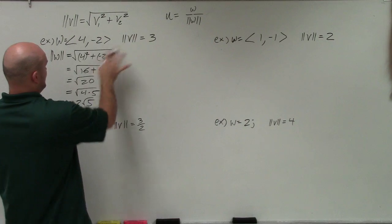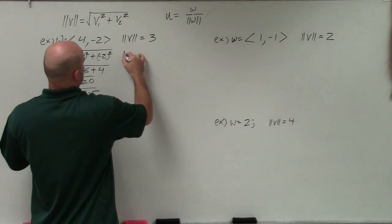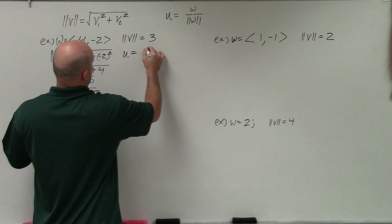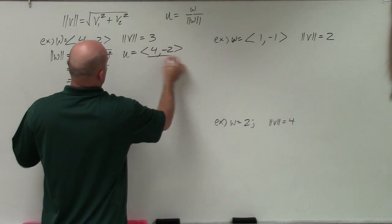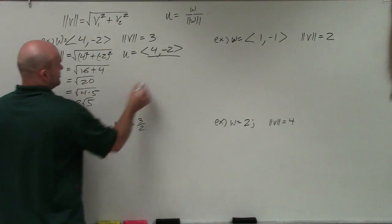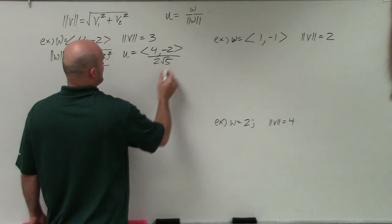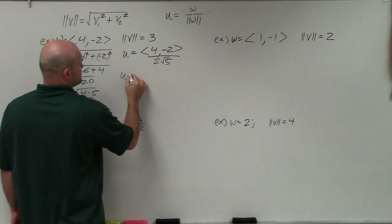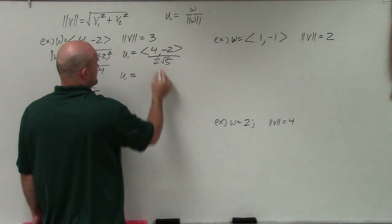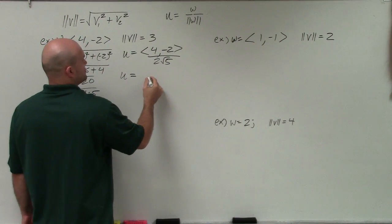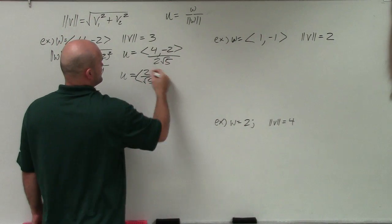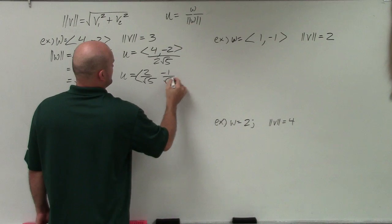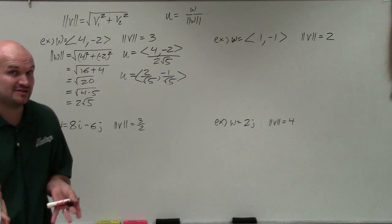So the unit vector is going to be w, so we have magnitude. So now I'll just say u is equal to 4 comma negative 2 divided by this new magnitude, which is 2 square root of 5. I'm going to distribute and simplify. So my new vector is going to be 2 over square root of 5 and negative 1 over the square root of 5. So that's my unit vector.